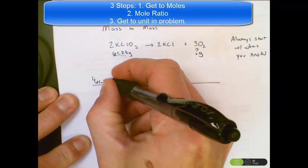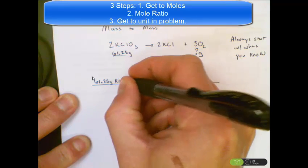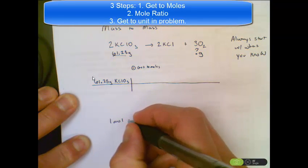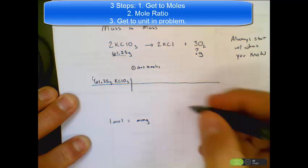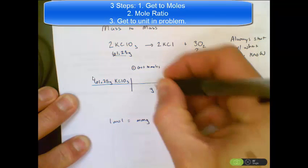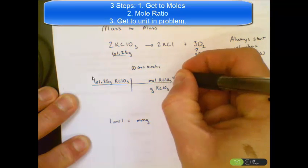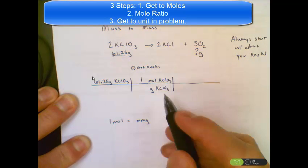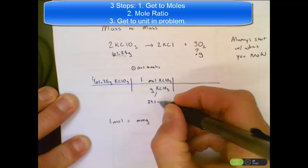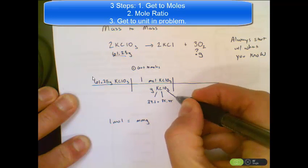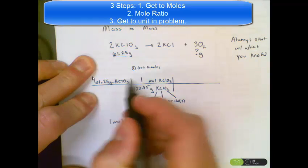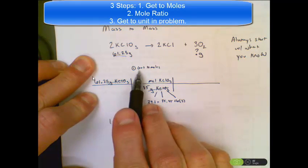61.25 grams goes in the top left box. To get to moles, I use one mole equals the molar mass in grams. Off the periodic table, the molar mass of KClO3 is: potassium 39.1, chlorine 35.45, and oxygen 16 times three copies, giving a total of 122.55. That allows grams to cross off. I accomplish step one — get to moles. Moles is the goals. I'm now in moles.